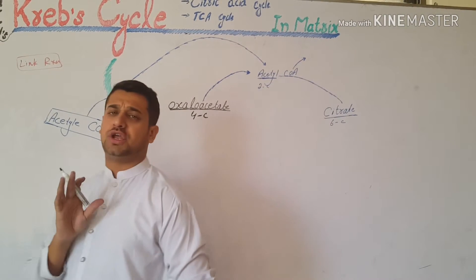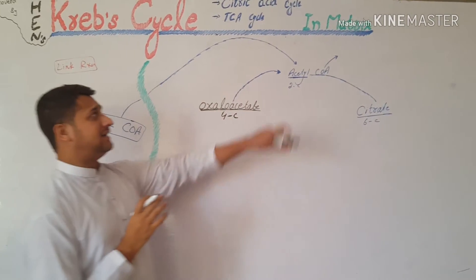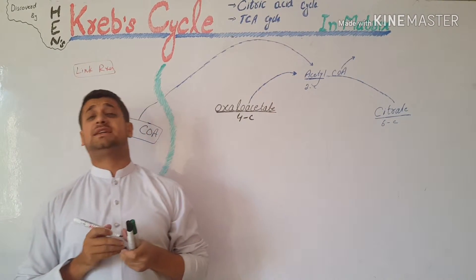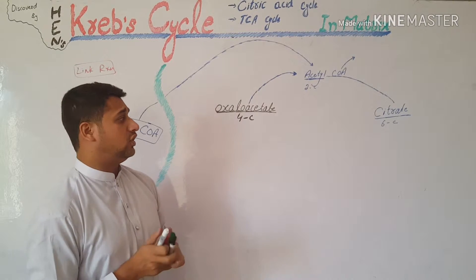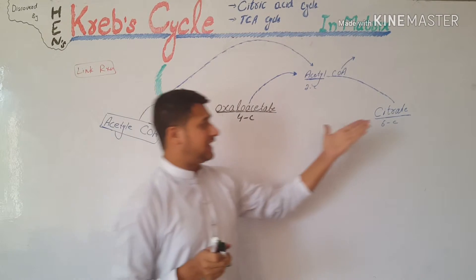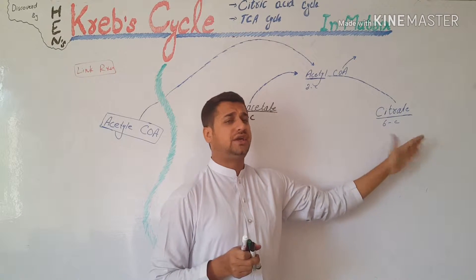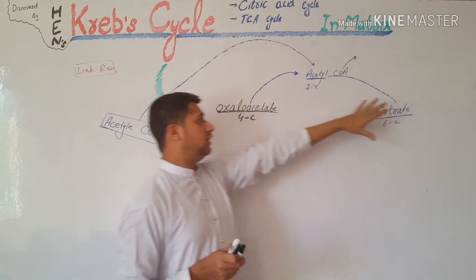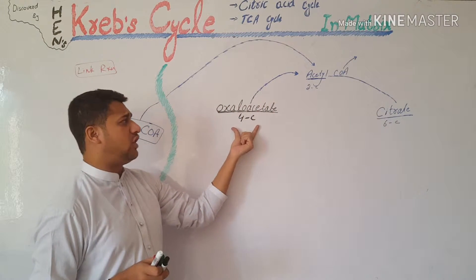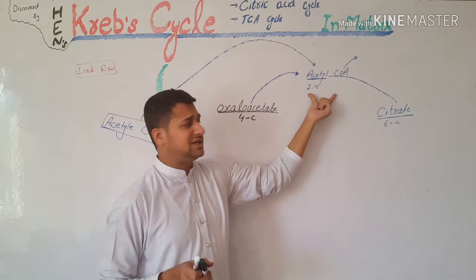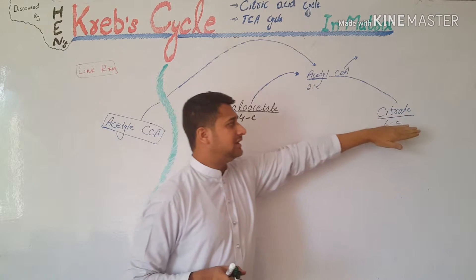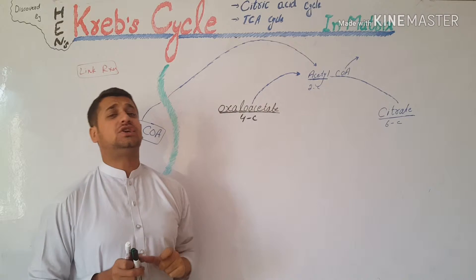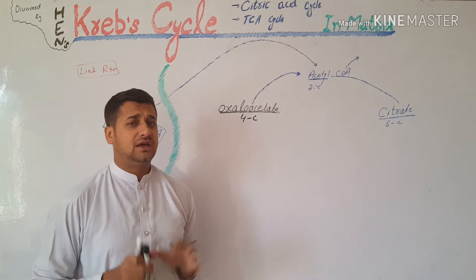Now the most important thing here: another name is the citric acid cycle. Citric acid, or citrate, is the first stable molecule, which is the combination of oxaloacetate and the acetyl group. That's why this process is also called the citric acid cycle.